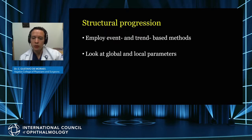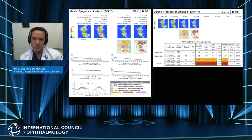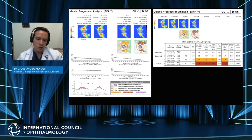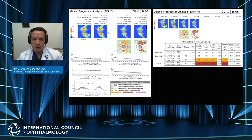Another important point is to always look at both global and local metrics when looking for progression, as they are complementary. Looking at one manufacturer's report with baseline and follow-up optic nerve head scans, areas in yellow suggest some progression in superior and inferior parts of the optic nerve, later confirmed in a subsequent event. It is also important to look at the rate of progression — such change is less concerning if it occurred over 10 years compared to a shorter period. The slope is very important.